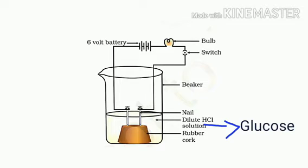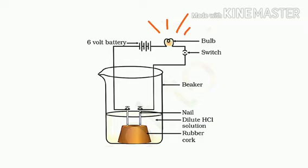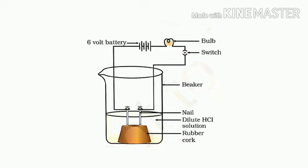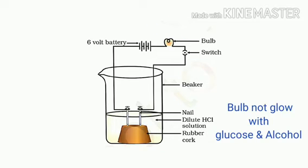What do you observe? Does the bulb glow in all situations? The bulb starts glowing with hydrochloric acid and sulfuric acid solution, but it does not glow in glucose and alcohol solution. This tells us that acids conduct electricity because acids have cations or H plus ions.